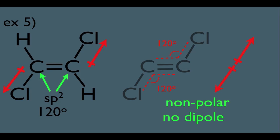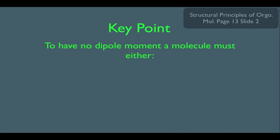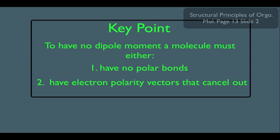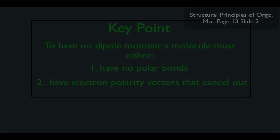Here are the key points. We just saw, to have no dipole moment, a molecule must either have no polar bonds or have electron polarity vectors that cancel out. Thank you.